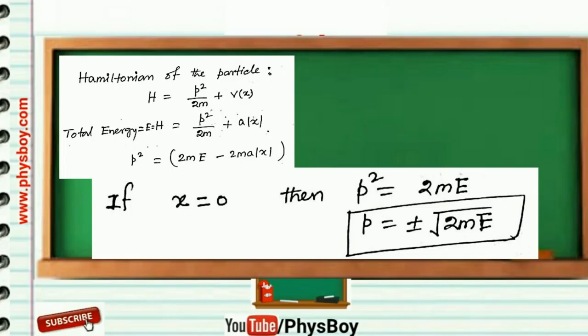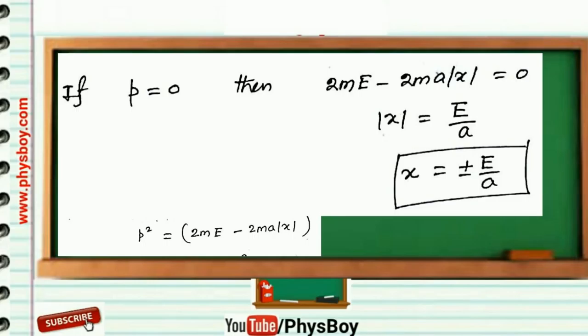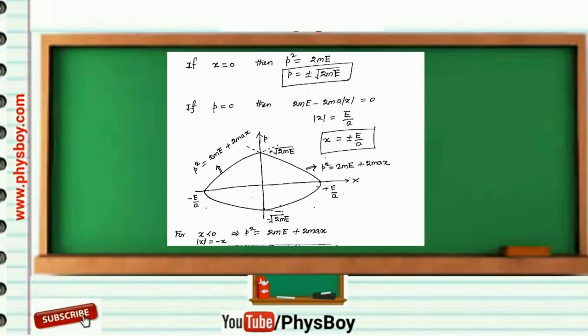And for p = 0, you will get x = ±E/a. The phase space trajectory will look like this.